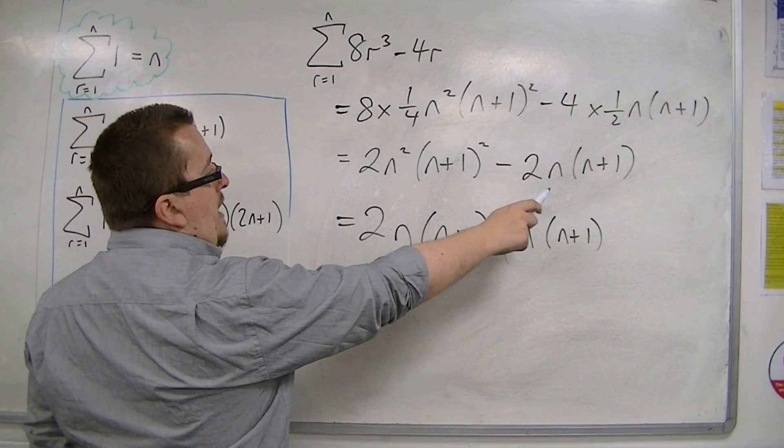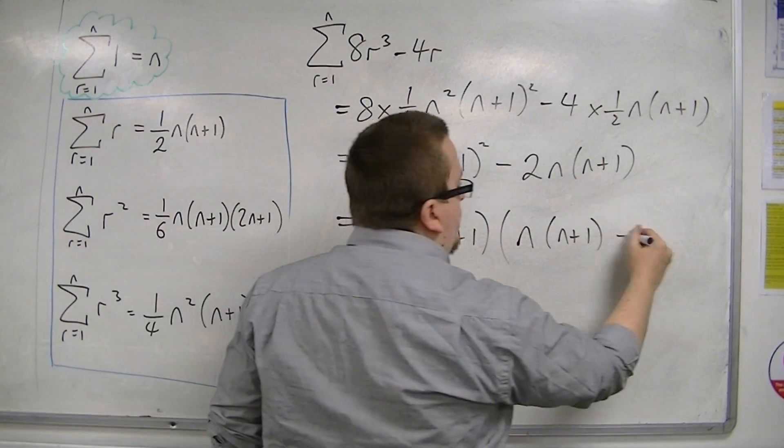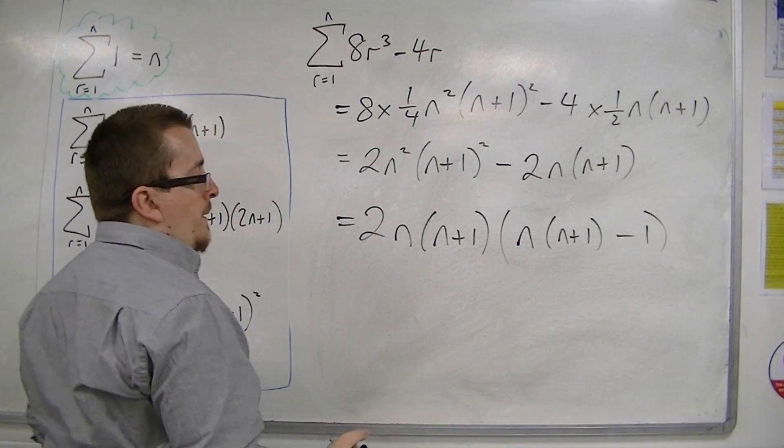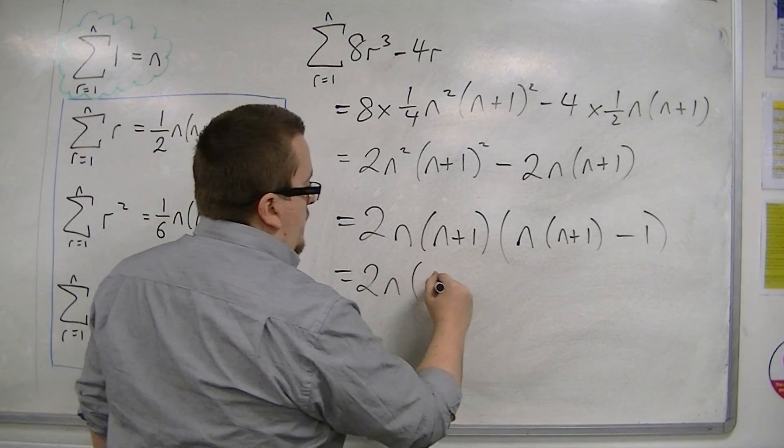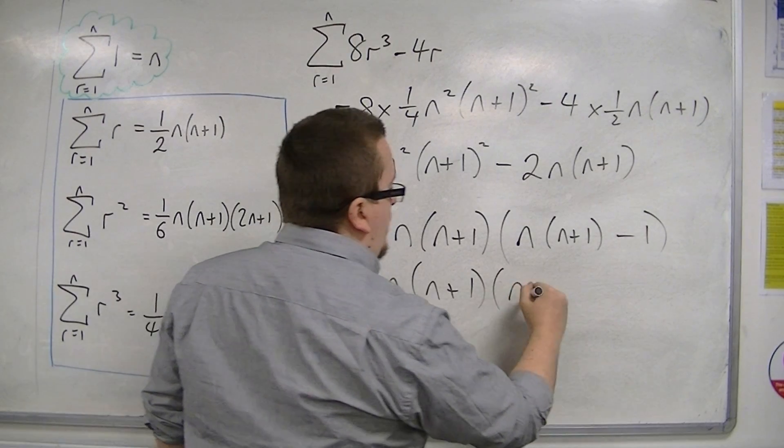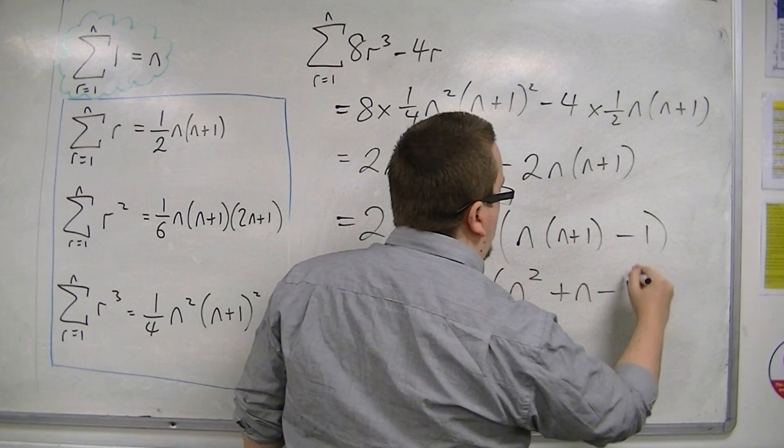And then here we're going to have take away 1. So we're going to be left with 2n(n+1)(n²+n-1).